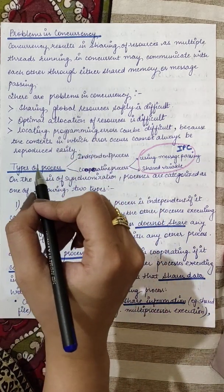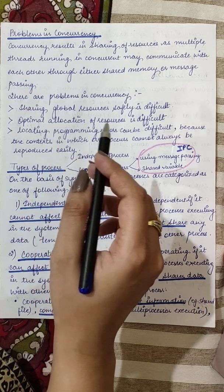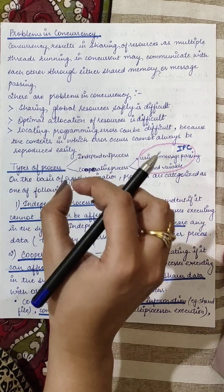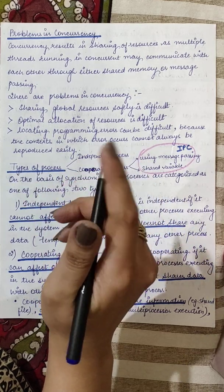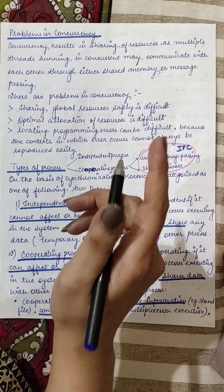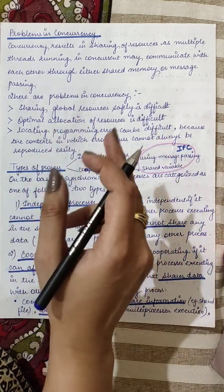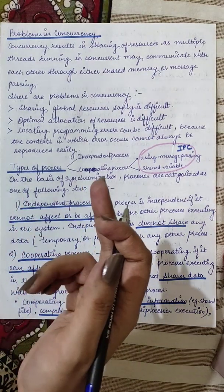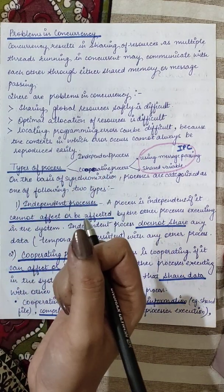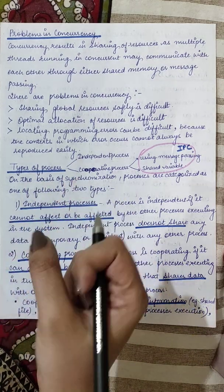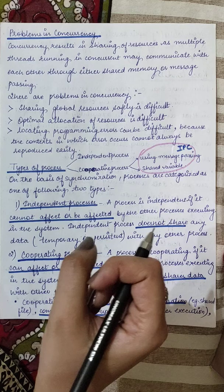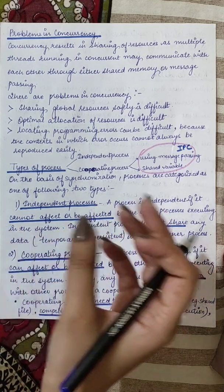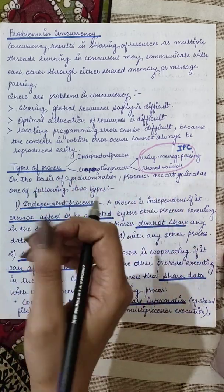Uske baad jab concurrency hogi, jab kuch cheeze bataegi to haan, par kuch problems bhi hain gi face hoongi. Four problems kya hoongi: sharing of global resources, optimal allocation of resources, and locating the programming errors. Because jab bahut sare participating log hai to usme error dhundna, who has created a mistake, is not easy task. So yeh teen problems hai jo ki hamein concurrency ki time pe face karne padti hai ki aap kis tarike se kisi global resource ko access denge multiple processes ko, kaisa allocation hoga resources ka, and agar koi error aa jata hai to usko kaisa find out karenge ke kaunsa process responsible hai.